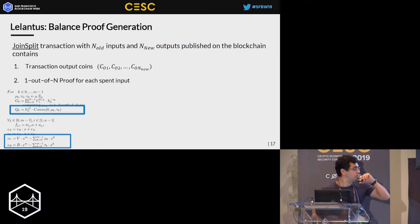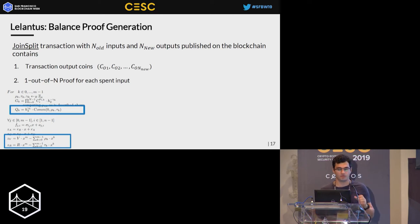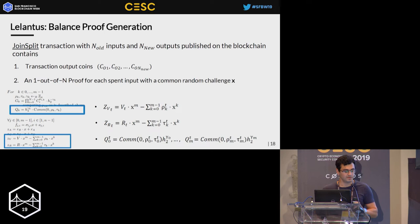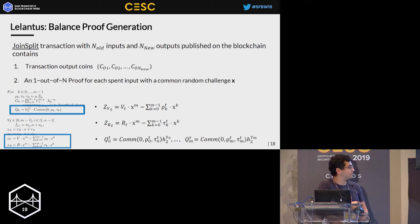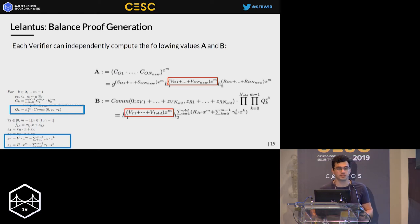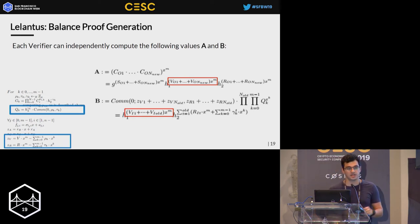Let's imagine a joint split transaction which spends n inputs and outputs n new coins. The overall transaction transcript contains a separate one out of n proof per each spent input, and also outputs n new coins. Zooming into the formulas: zv encodes the coin value v, blinded by some random factors; similarly for zr. The proof transcript also contains auxiliary values Q, which are commitments to these blinding factors.